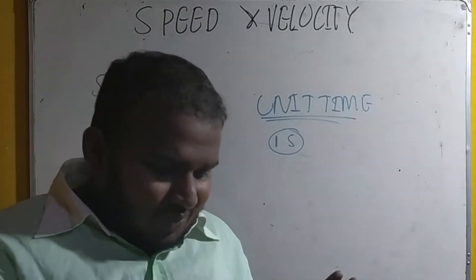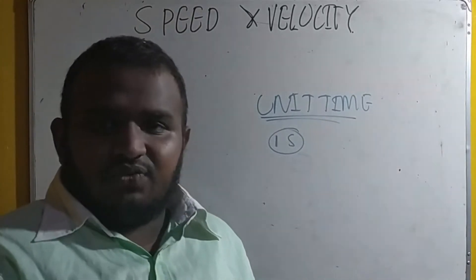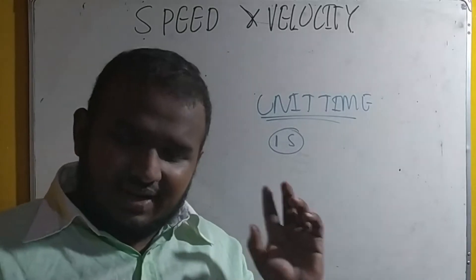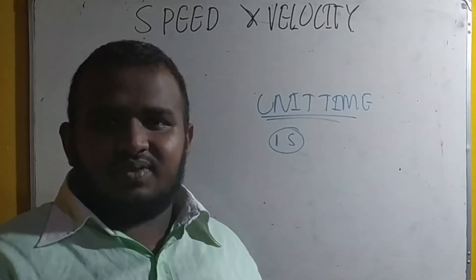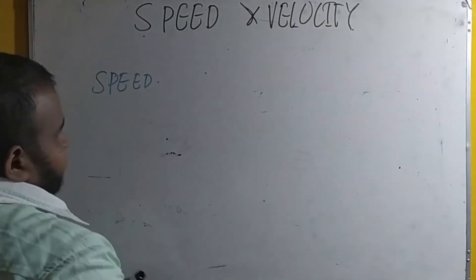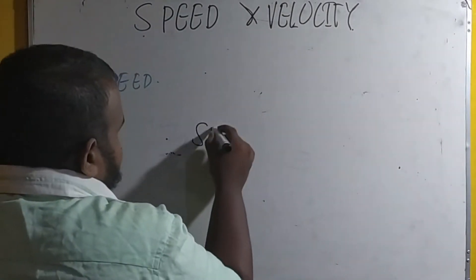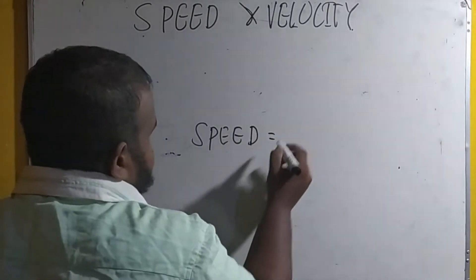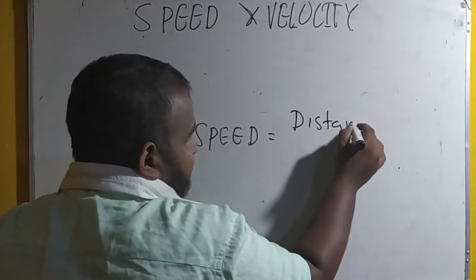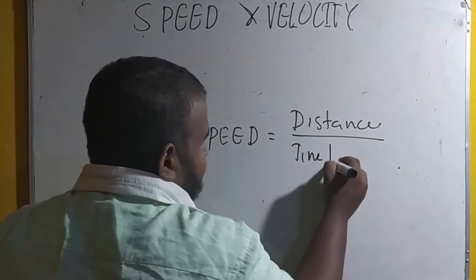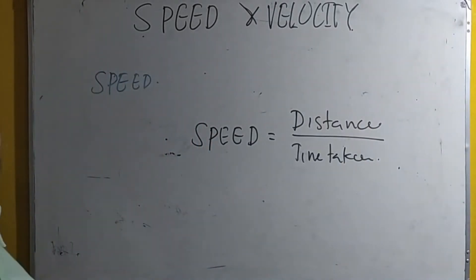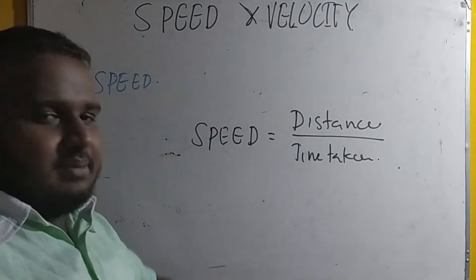What is unit time? Speed can be defined as how much an object moved or traveled in a unit time. Distance can be calculated by the equation: speed is equal to distance divided by time taken.